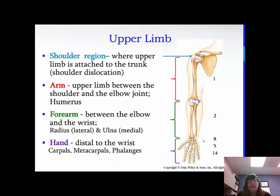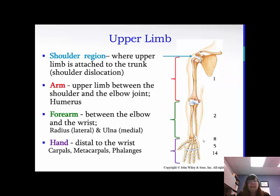The upper limb: you have the shoulder region, where it's attached to the trunk — shoulder dislocations are common. The arm is the upper limb between the shoulder and the elbow joint, which is the humerus for the bone. The forearm is between the elbow and the wrist, made up of the radius on the lateral portion and the ulna on the medial portion. And then the hand, which is distal to the wrist, is made up of the carpals, metacarpals, and phalanges.